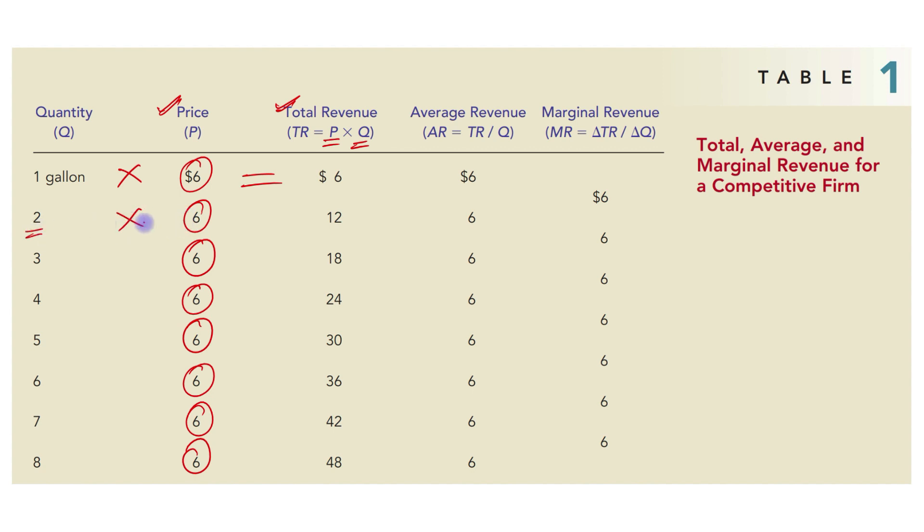So, 6 times 2 is $12, 3 times 6 is $18, and so on.